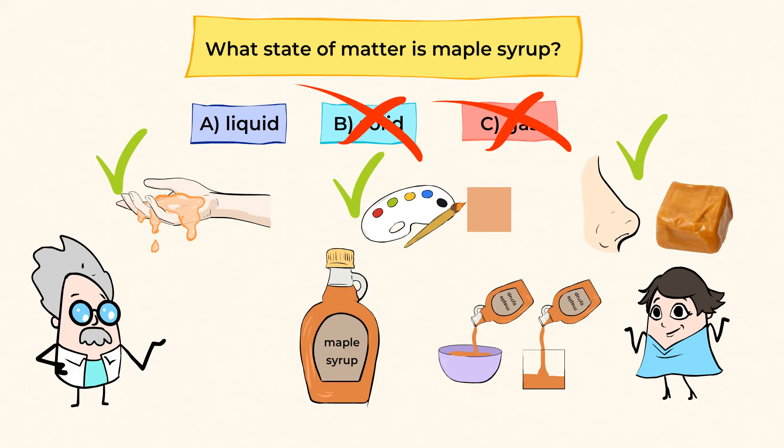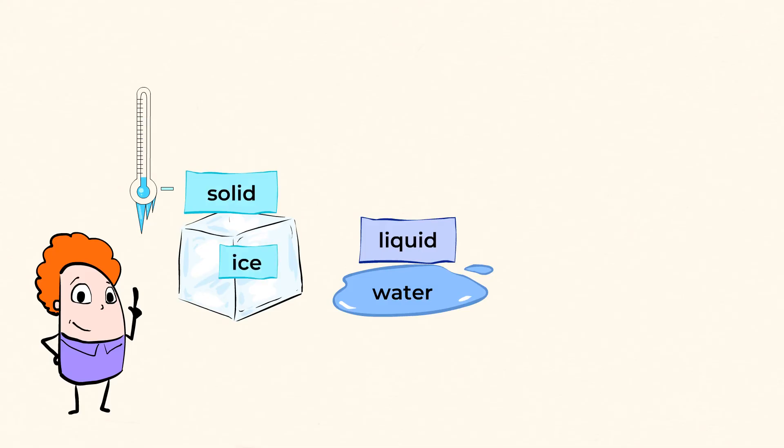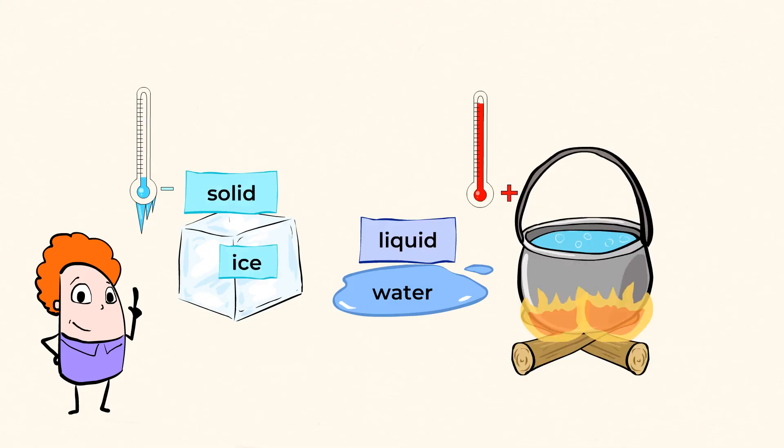And let's get back to water. It's probably the most interesting matter of all, as it exists in all three different states of matter. As a liquid, we call it water. If we freeze it, it becomes solid, and we call it ice. And if we put it in a pot on the stove to boil water for our pasta, you'll see the steam coming out of the pot, which is the third state of matter, gas. How mighty cool is that?